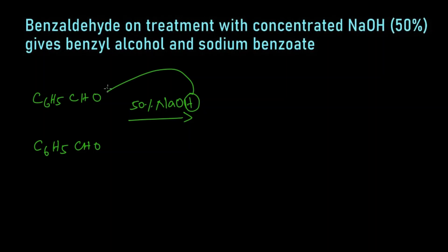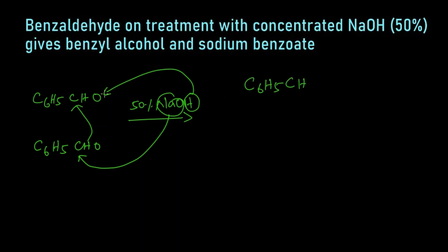What happens is: this hydrogen will get attached to this carbon, and this ONa will get attached to this carbon. Here a proton transfer takes place — this hydrogen gets transferred to this carbon, so we get C6H5CH2 here.